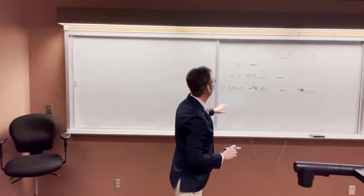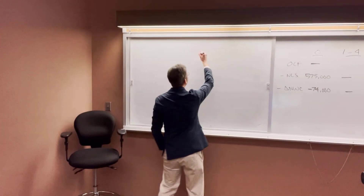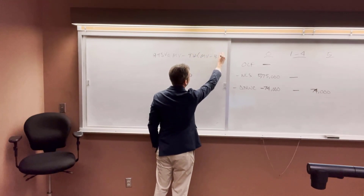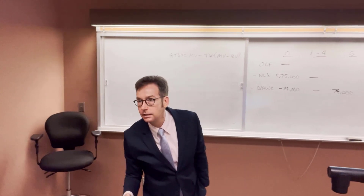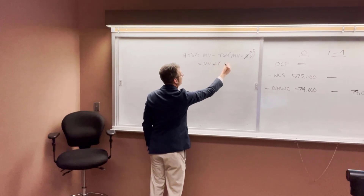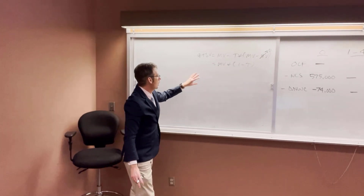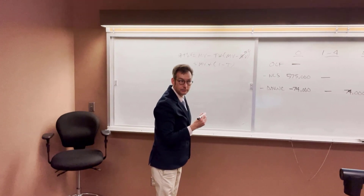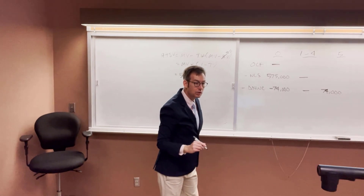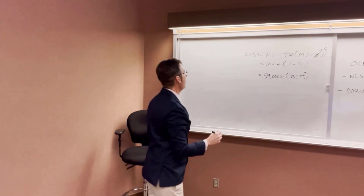For year five net capital spending, the asset will be worth $59,000 at the end. We need to calculate after-tax salvage value: market value minus tax rate times (market value minus book value). The asset is depreciated to zero, so book value is zero. That simplifies to market value times (1 minus T). With a 21% tax rate, one minus T is 0.79. So after-tax salvage value equals $59,000 times 0.79.